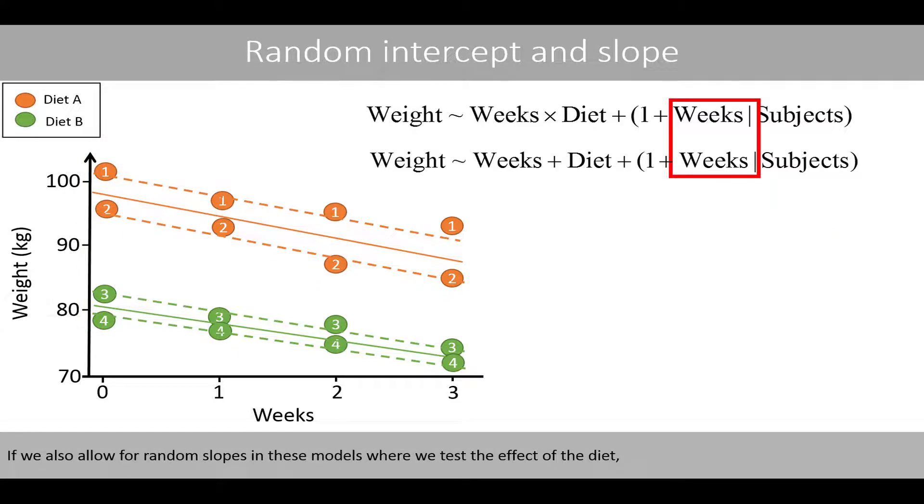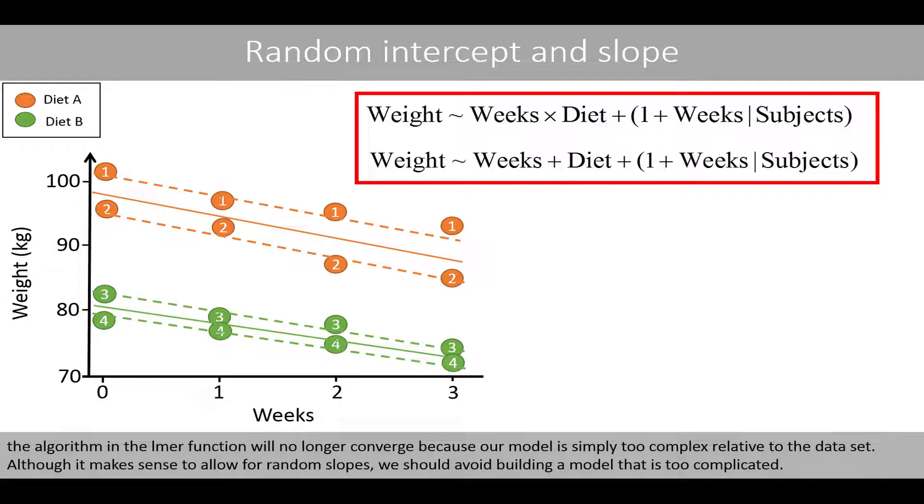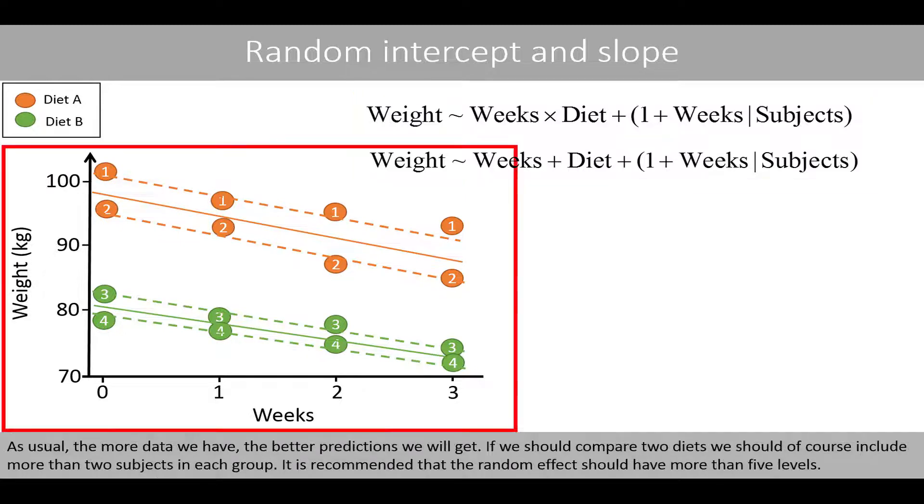If we also allow for random slopes in these models where we test the effect of the diet, the algorithm in the lmer function will no longer converge because our model is simply too complex relative to the dataset. Although it makes sense to allow for random slopes, we should avoid building a model that is too complicated. As usual, the more data we have, the better predictions we will get.